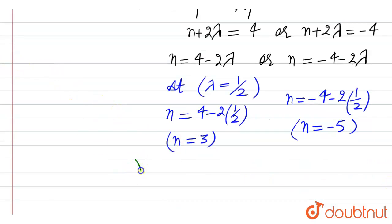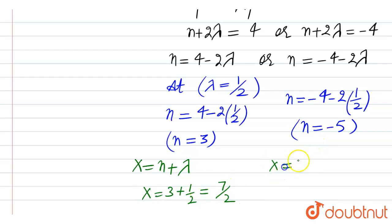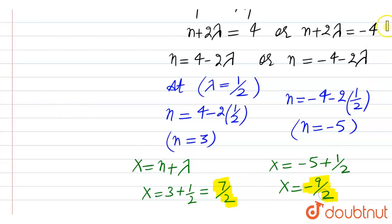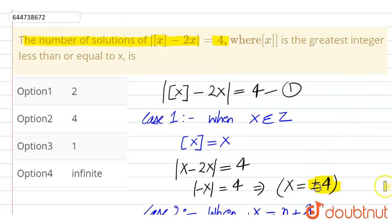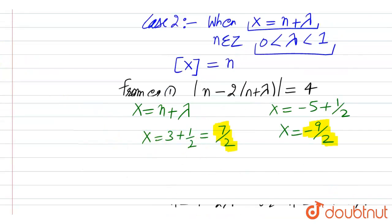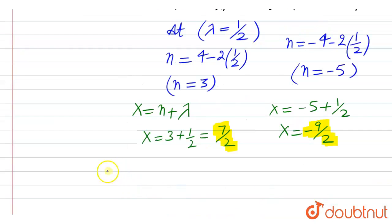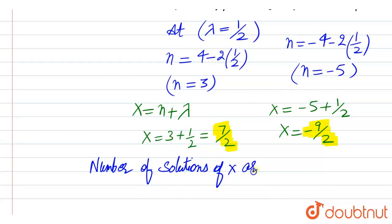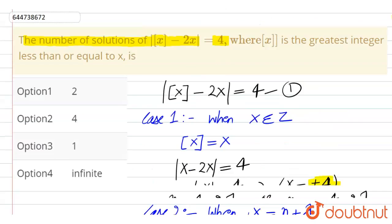We need to find the value of x, where x is n plus lambda. So x equals 3 plus 1 by 2, which equals 7 by 2. And x equals minus 5 plus 1 by 2, which equals minus 9 by 2. These are all the possible values of x: plus 4, minus 4, 7 by 2, and minus 9 by 2. So the number of solutions is equal to 4. The correct option is option number 2.